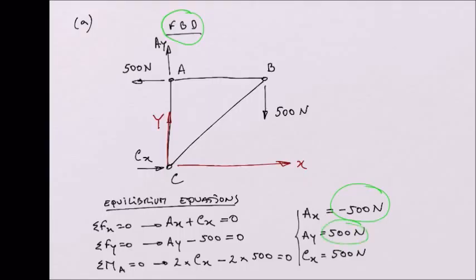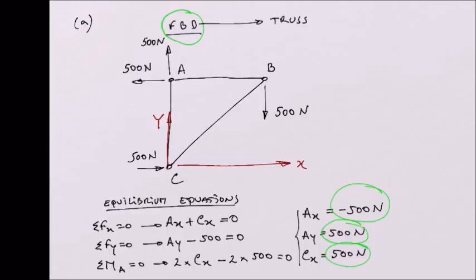Reaction AY gives a positive number, so our initial orientation for AY was correct — we can confirm it is 500 N upward. Similarly, CX is positive, so the initial orientation for the reaction at point C was correct and equals 500 N. With this free body diagram we were able to calculate all the reactions at the supports.